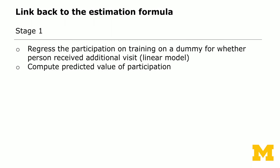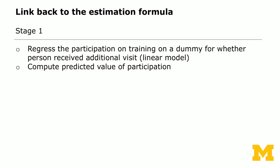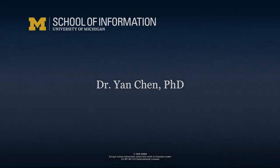Now let's link this back to the estimation formula. In stage one, we regress the participation-in-training decision on a dummy variable for whether the person received the additional visit, where the additional visit is randomized by the experimenter. We then compute the predicted value of participation p-hat. In stage two, we regress the outcome variable — the wages — on the predicted value of participation.